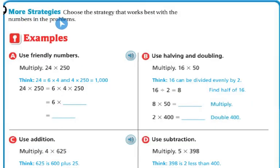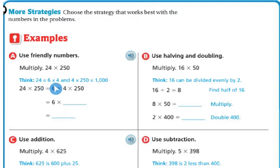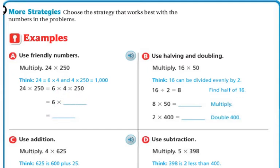More strategies — choose the strategy that works best with the numbers in the problem. Use friendly numbers: if you multiply 24 times 250, you can think that 24 equals 6 times 4, and 4 times 250 is 1,000. So 24 times 250 is the same as 6 times 4 times 250. Put the 6 on the outside, do 4 times 250 to get 1,000, and then it's easy to do 6 times 1,000, which is 6,000.